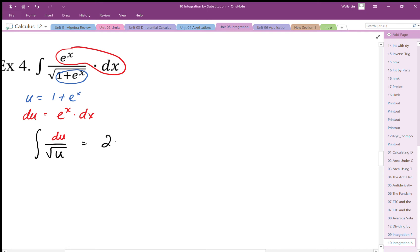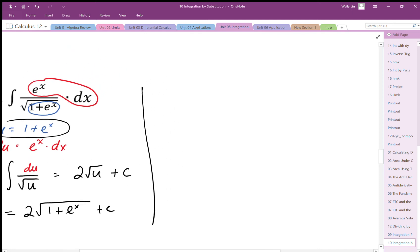I don't want my anti-derivative expressed in terms of u, I really want x's. So then I replace that u with my original u which was 1 plus e to the x, which I have defined up here, plus c.